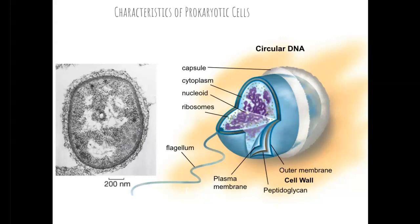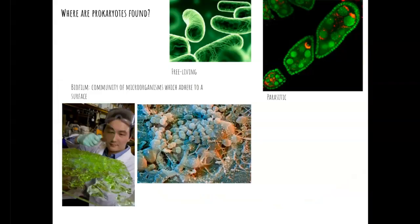Prokaryotes also have a flagellum, which allows them to move around and find areas that have good amounts of food. So where are prokaryotes found? They are found pretty much everywhere. They can be free-living, so you would find them on the surfaces of leaves or fruit, in the soil, all over.